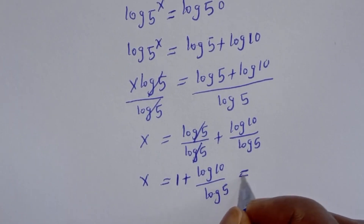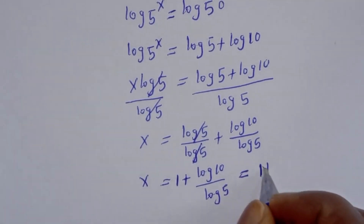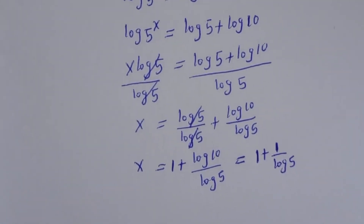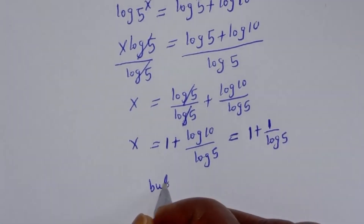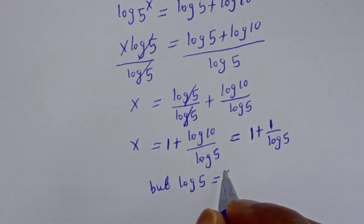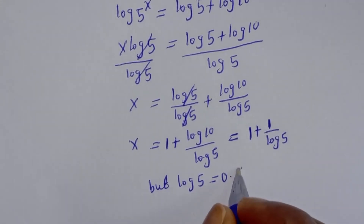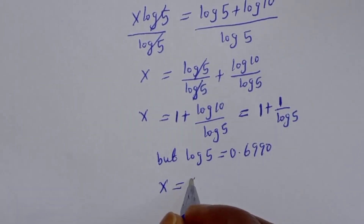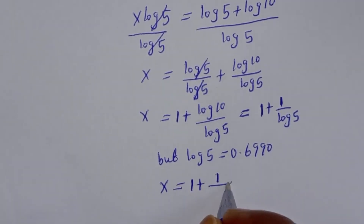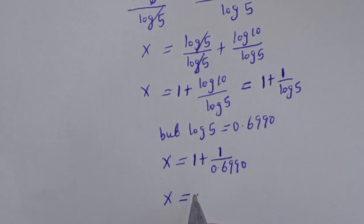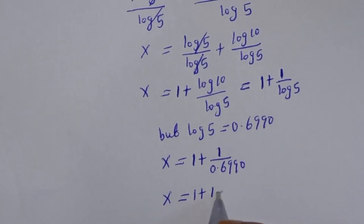Therefore s is equal to 1 plus 1 over log 5, since log base 10 of 10 equals 1. And log 5 is equal to 0.6990, so s is equal to 1 plus 1 divided by 0.6990.